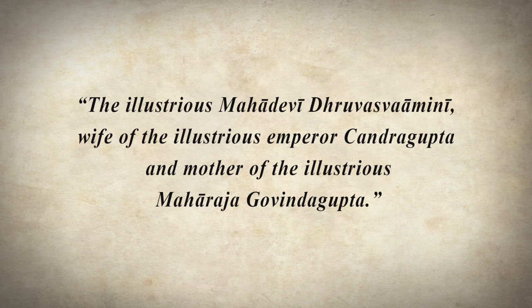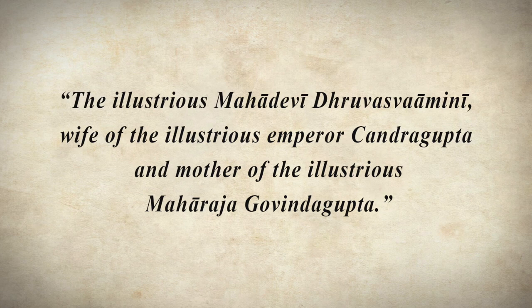It appears that Kumar Gupta also had a brother. Information about this brother comes from a seal found in Vaishali. The seal reads: 'the illustrious Mahadevi Dhruva Swamini, wife of the illustrious Emperor Chandragupta and mother of the illustrious Maharaj Govinda Gupta.' So Dhruva Devi is here called Dhruva Swamini, and Maharaj Govinda Gupta was her son with Chandragupta — making him the brother of Kumar Gupta. The title Maharaj indicates he was most likely a governor, and an inscription in central India suggests he was the governor of Vidisha.